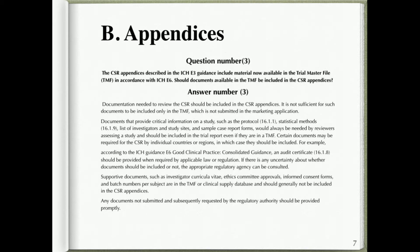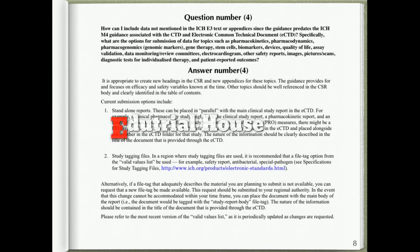Certain documents may be required for the CSR by individual countries or regions, in which case they should be included. For example, according to the ICH E6 Good Clinical Practice consolidated guidance, an audit certificate (16.1.8) should be provided when required by applicable law or regulation. If there is any uncertainty about whether documents should be included, the appropriate regulatory agency can be consulted. Supportive documents such as investigator curricula vitae, ethics committee approvals, informed consent forms, and batch numbers per subject are in the TMF and should generally not be included in the CSR appendices.